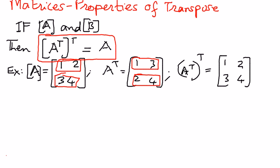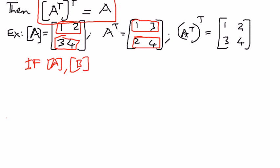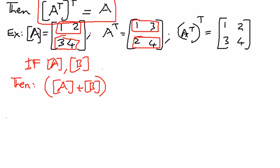The second property is: if A and B are matrices, then if we combine matrix A and matrix B and transpose the result, it is the same as A transpose plus B transpose. That is the property.